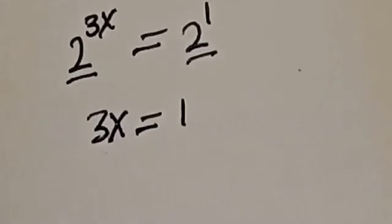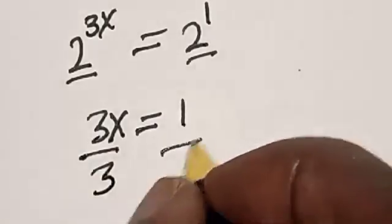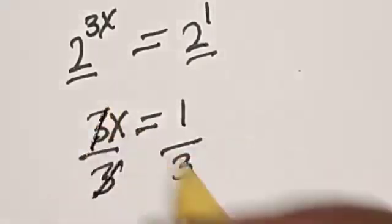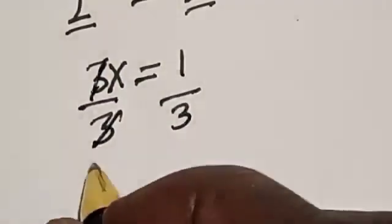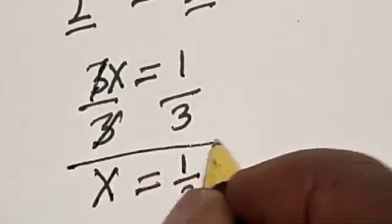3x is equal to 1. Now we are looking for the value of x. Let's divide both sides by 3. This cancels, then x is equal to 1 divided by 3. That is the value of x. We can check to confirm if our answer is right or wrong.